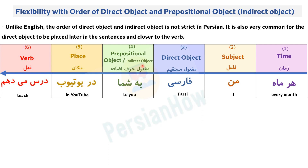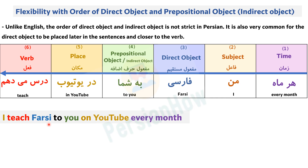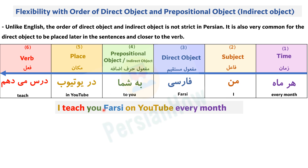Flexibility with the order of direct object and prepositional (indirect) object: in Farsi, the indirect object always gets a preposition — you cannot have an indirect object without one. The preposition that comes with the indirect object is the preposition that comes with the verb. For 'dars midaham,' 'dars dadan' uses 'be,' so the indirect object takes 'be.' In English, we say 'I teach you Farsi' — no preposition before 'you.' In Farsi, we say 'be shoma dars midaham' — 'to you.'